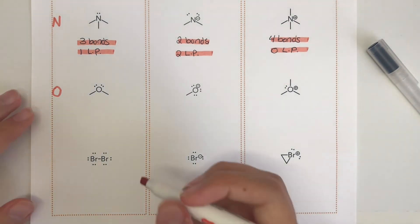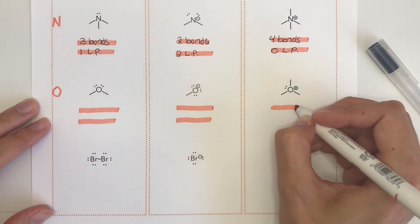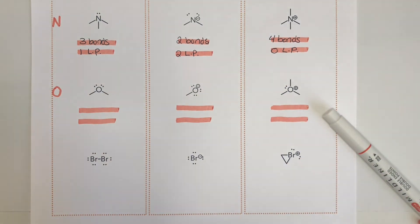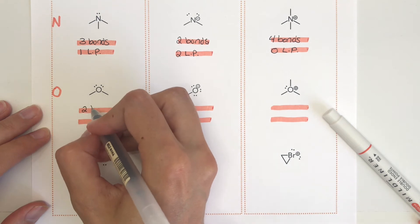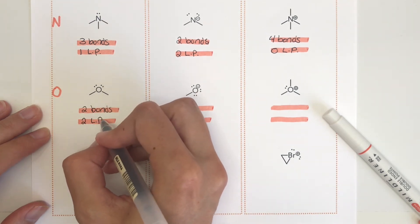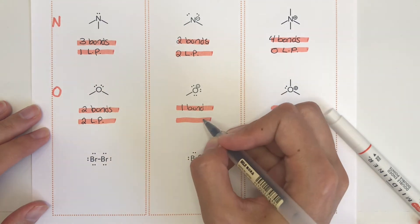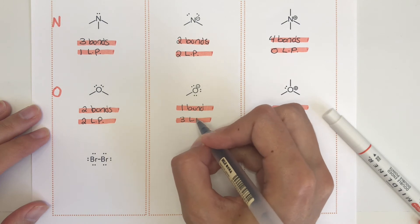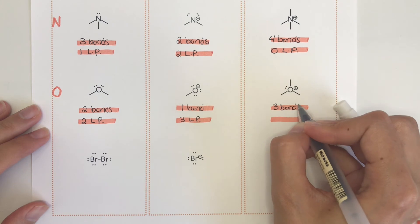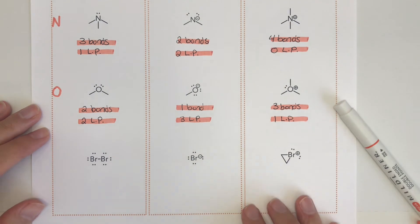Moving on to oxygen: neutral oxygen atoms have two bonds and two lone pairs — we're used to seeing that in water. Negatively charged oxygen atoms have one bond and three lone pairs around them, and we'll see a lot of those in organic chemistry. Positively charged oxygen atoms have three bonds and one lone pair.